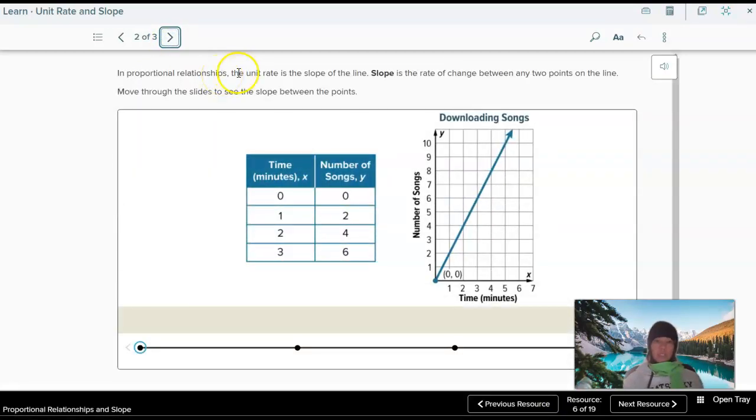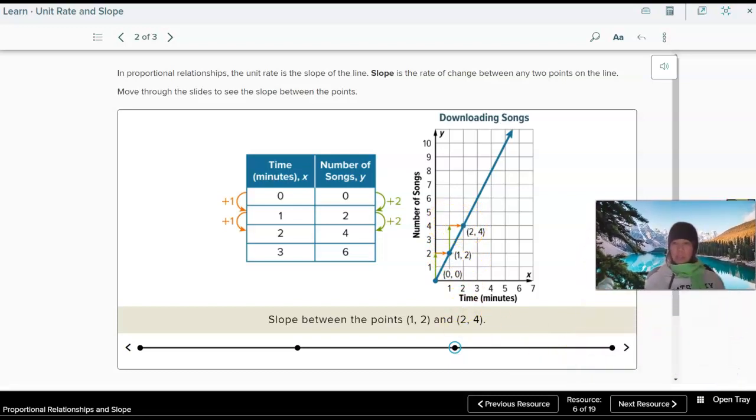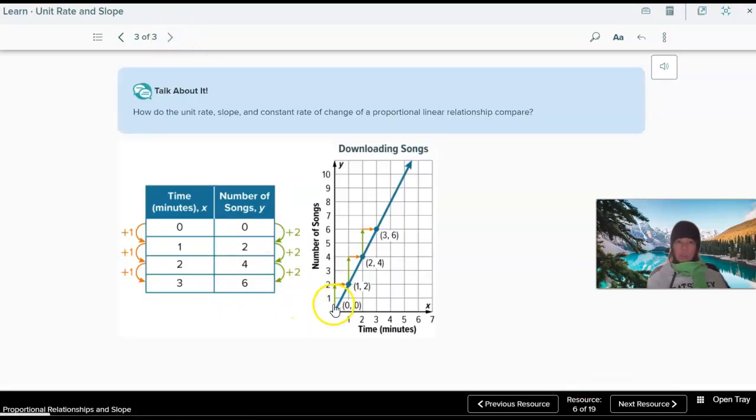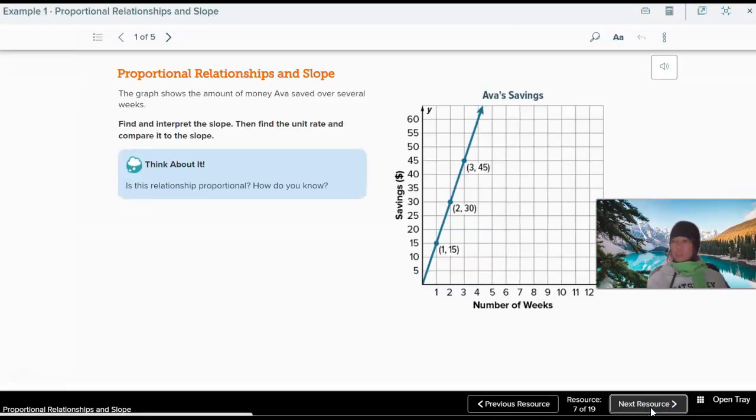Now, in proportional relationships, the unit rate is the slope of the line. And that slope is also the rate of change between any two points on the line. So slope, one definition of slope is a rate of change. How does one variable change as the other changes? So you can kind of see that as x changes by one, y changes by two. So that rate of change, we call that your slope. So the slope between the lines zero, zero, and one, two, here's our slope. We go up two songs for every one minute. We go up two songs every one minute. So you can kind of see how that works there. So the slope is two over one, up two over one, up two over one. So two over one, two songs up for every one minute that passes. So our slope is two. Our rate of change is two.